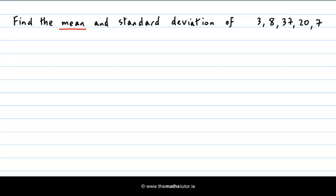To find the mean we just add up all of the numbers and divide by the number of numbers. So what we do is this: 3 plus 8 plus 37 plus 20 plus 7 divided by the number of numbers which is 5.